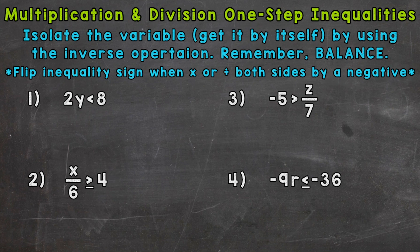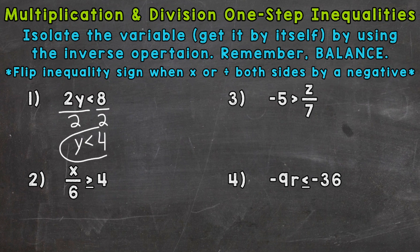Let's jump into number one, where we have 2y is less than 8. We need to isolate that variable y. We're multiplying it by 2, so the inverse or opposite would be dividing by 2. Let's divide both sides by 2 — those 2s are going to cancel out and isolate the y. Bring down our inequality sign. 8 divided by 2 is 4. So y is less than 4. Anything less than 4 is going to be a solution for that inequality.